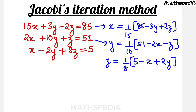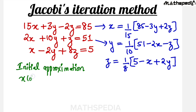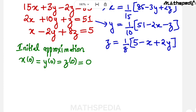Now, before the first iteration we have to consider the initial approximation. That is X₀ = Y₀ = Z₀ = 0. We have to put these values as zero. Now we will go for the first iteration.